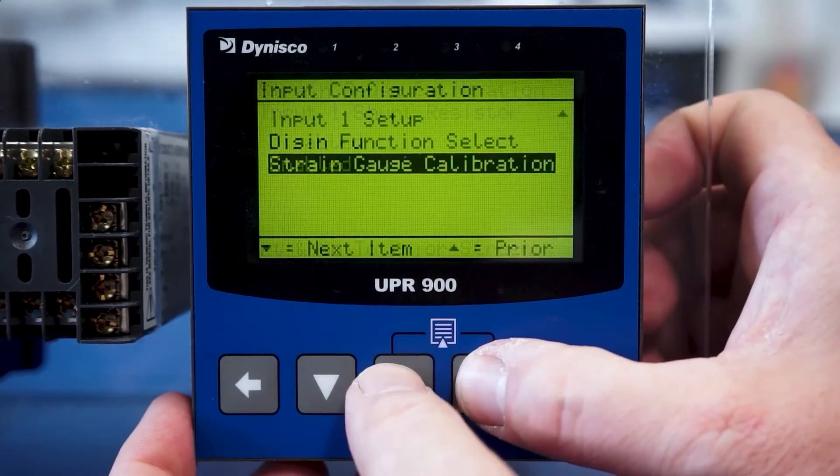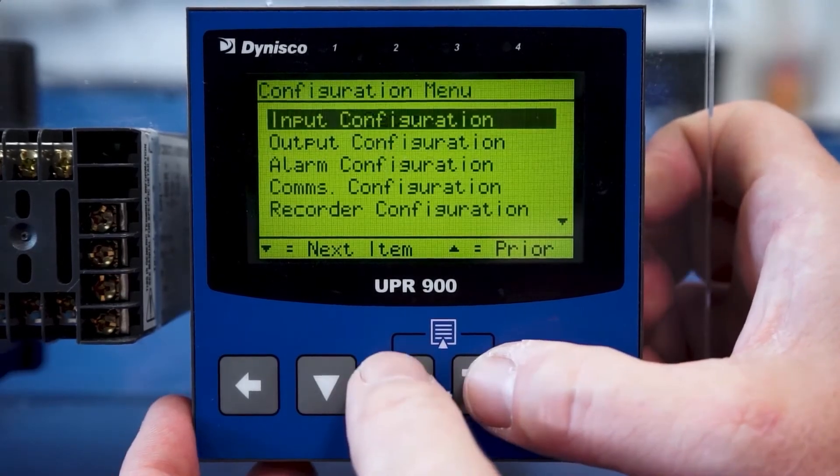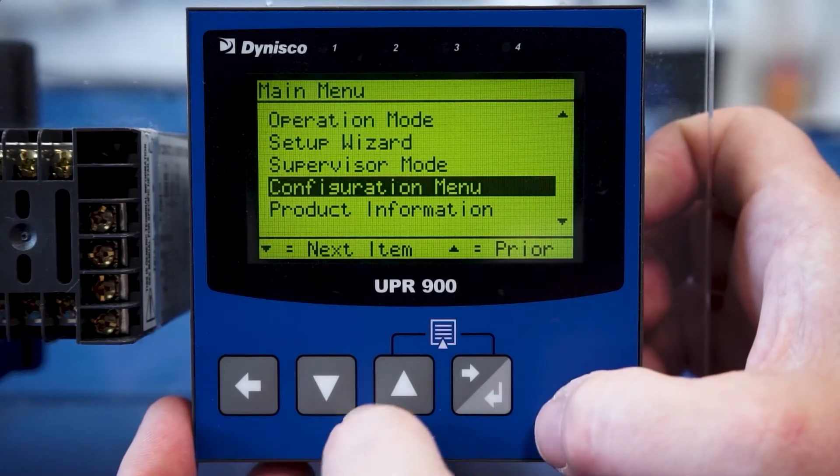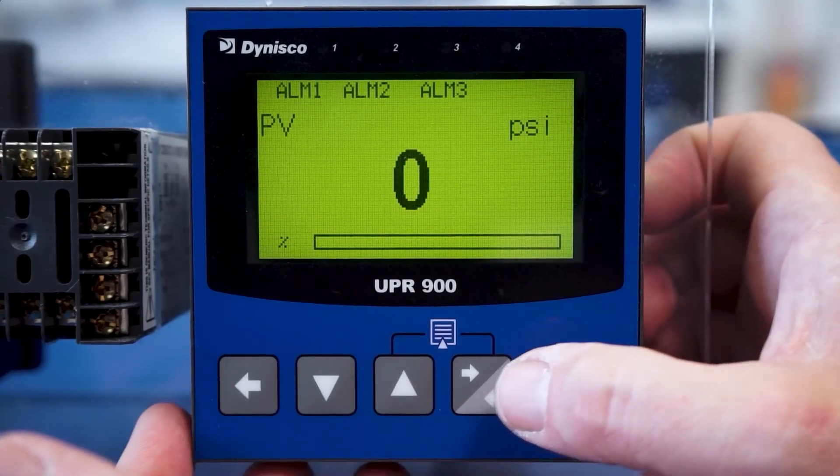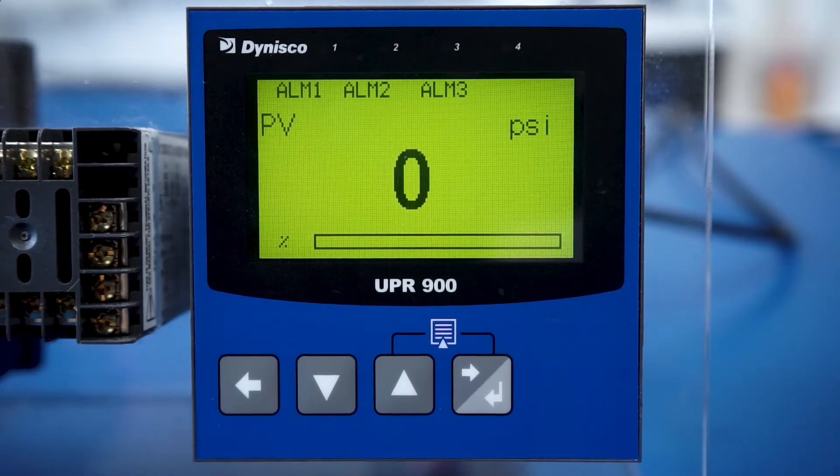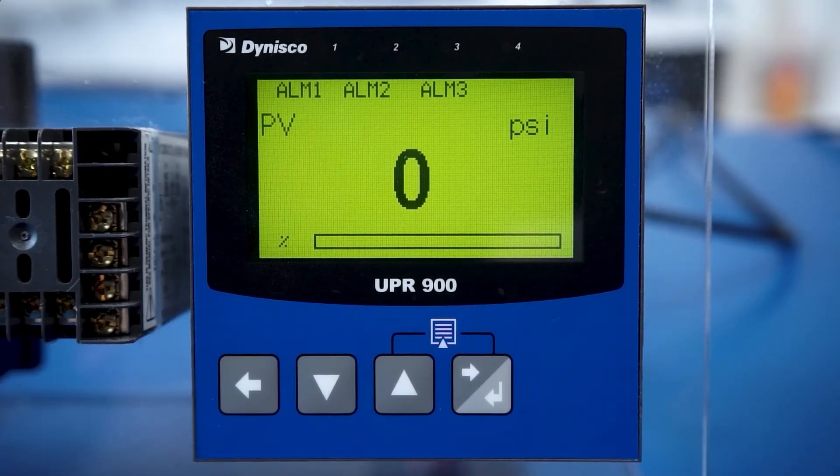With the sensor and instrument calibrated, the technician can then exit the configuration menu and select operation mode. Dynisco recommends this step be repeated any time the sensor exhibits pressure readings that appear abnormal or if the sensor has been swapped out.